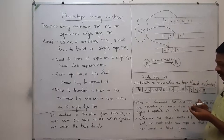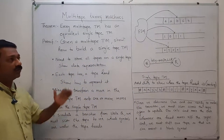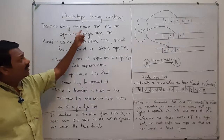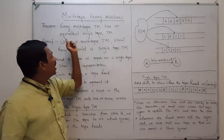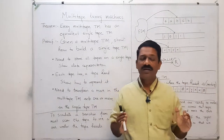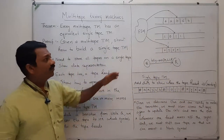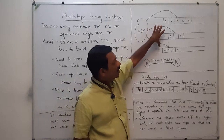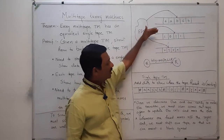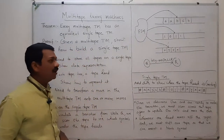I am going to prove that a multi-tape Turing machine accepts the same language as a single tape Turing machine. Every multi-tape Turing machine has an equivalent single tape Turing machine — that means if you have a multi-tape Turing machine, then there exists an equivalent single tape Turing machine. For that, we are going to construct a single tape Turing machine equivalent to this multi-tape Turing machine.